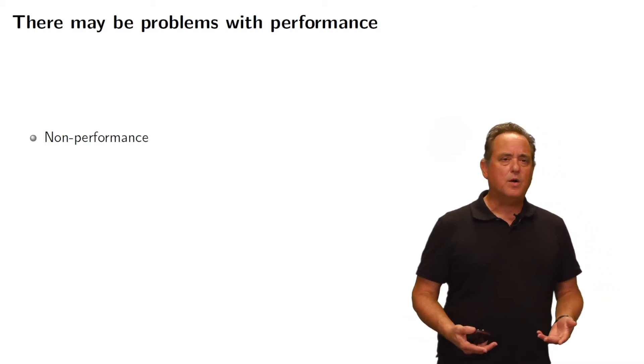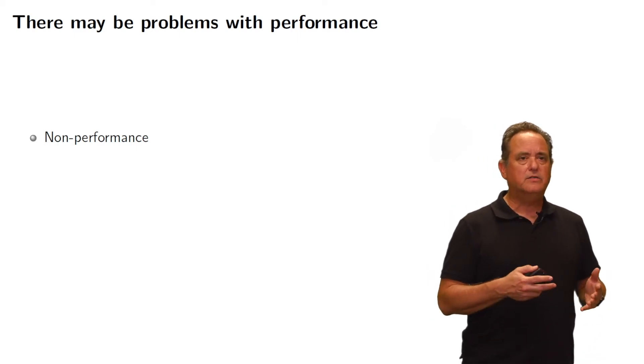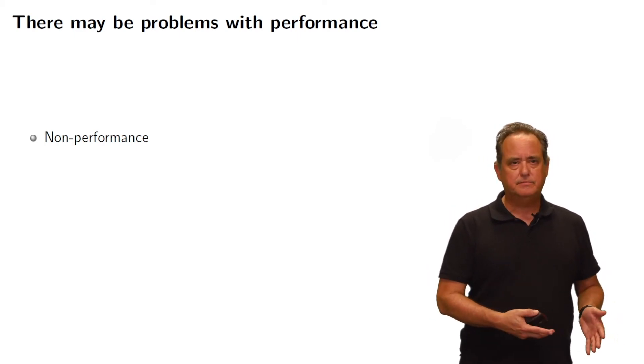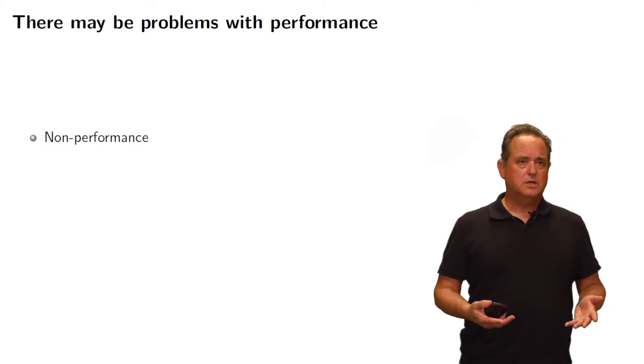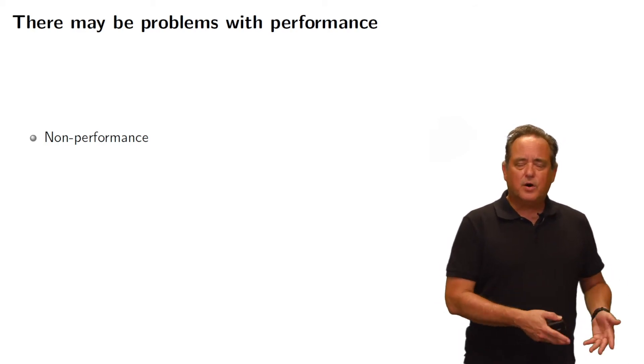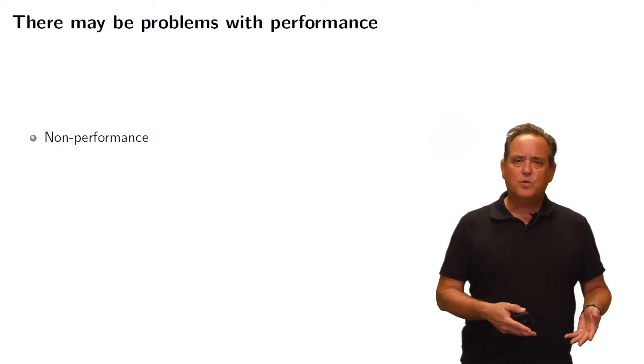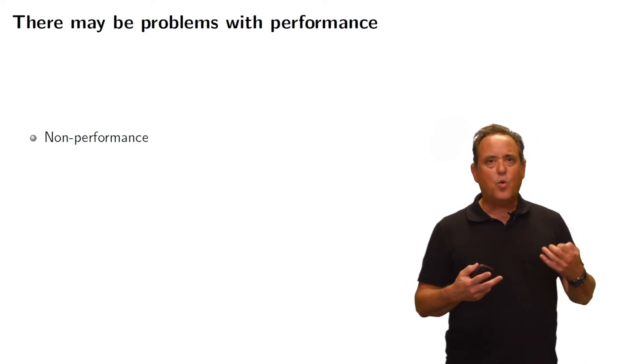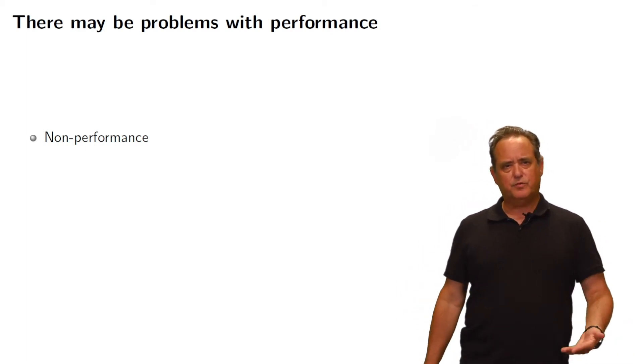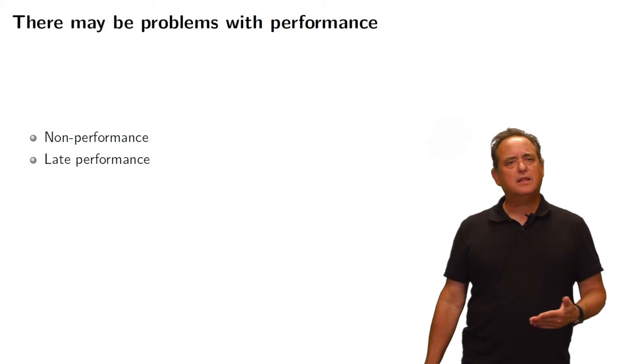And in non-performance, the non-performance of a seller is a failure to ship. You don't ship the goods. Non-performance on the part of a buyer, you didn't pay for the goods. So that's one type of problem with performance. But of course, it's not limited to that.